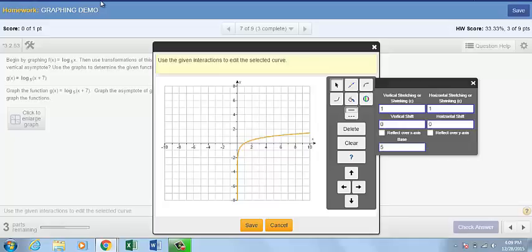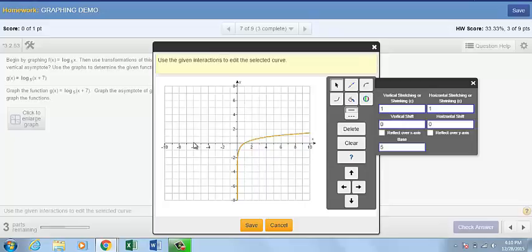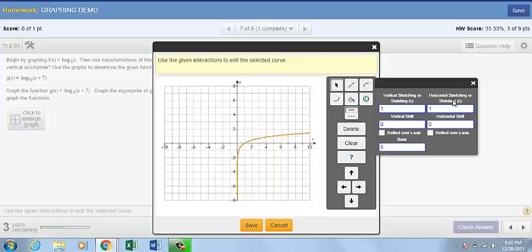The other part of this question asks us to do log base 5 of x plus 7. Think about what that means in terms of your graph. If, for example, y was 0, then x would be negative 6. Notice, however, if we try to graph that, we're just going to be prompted to return to our regular graph that we've already completed and use the shrinking, stretching, or reflection tool.